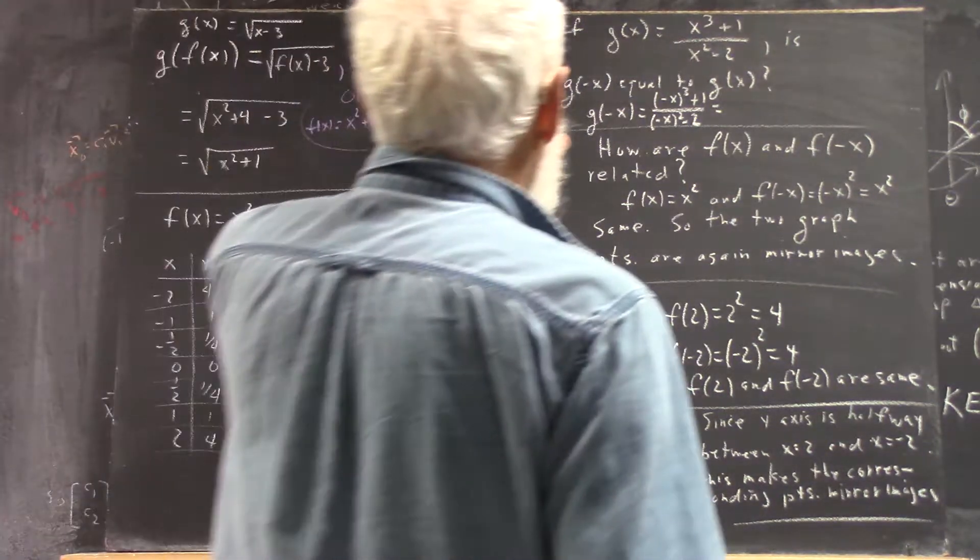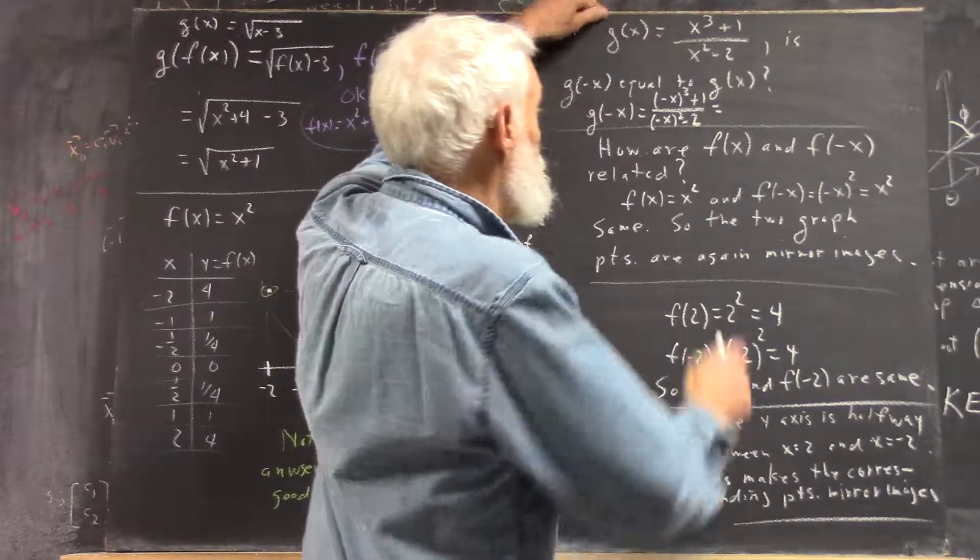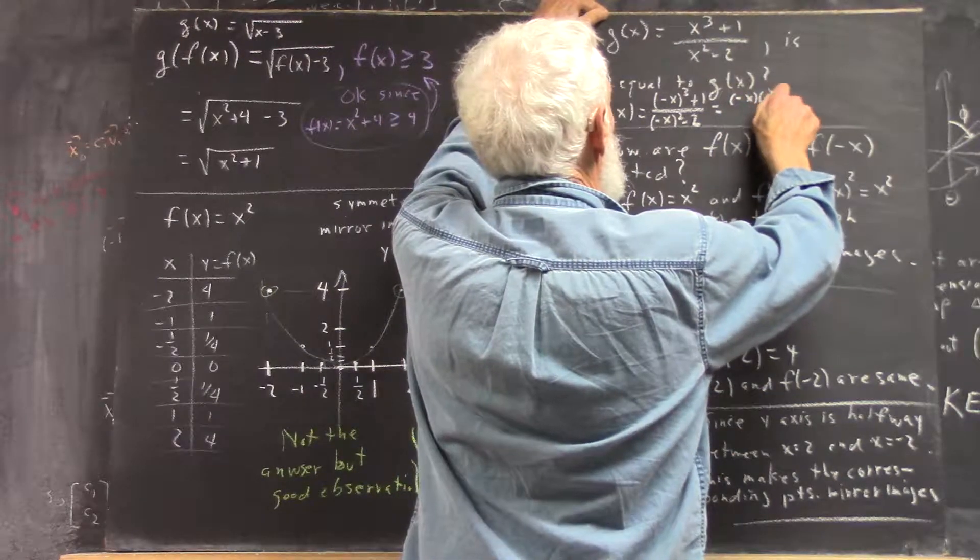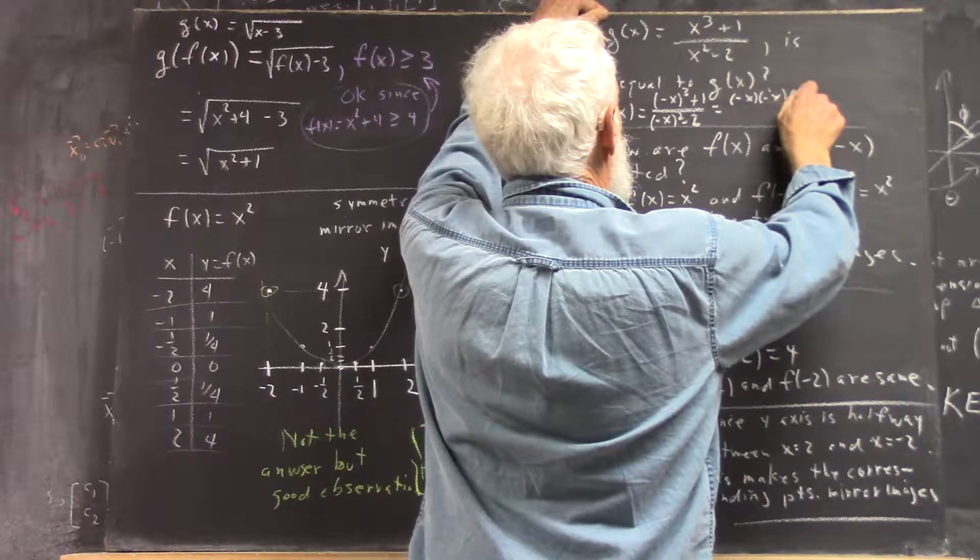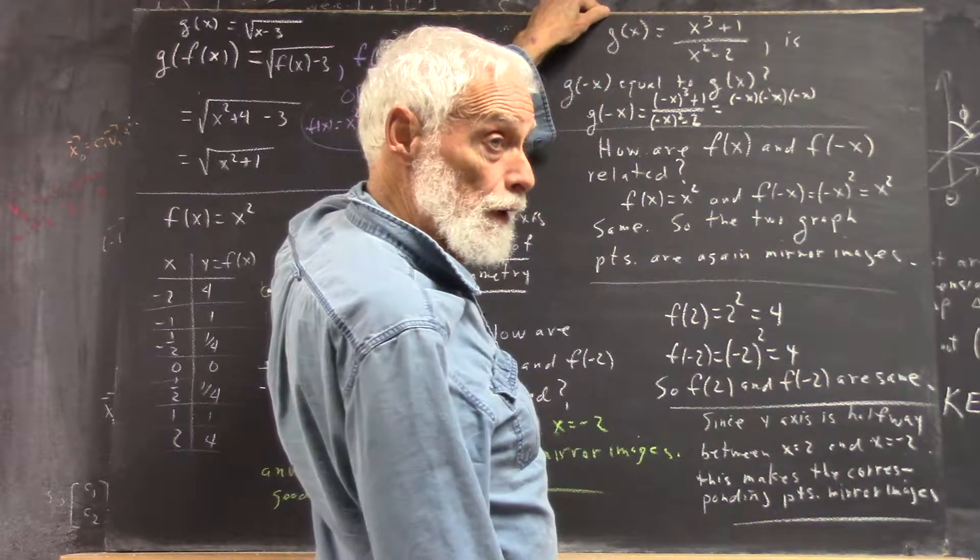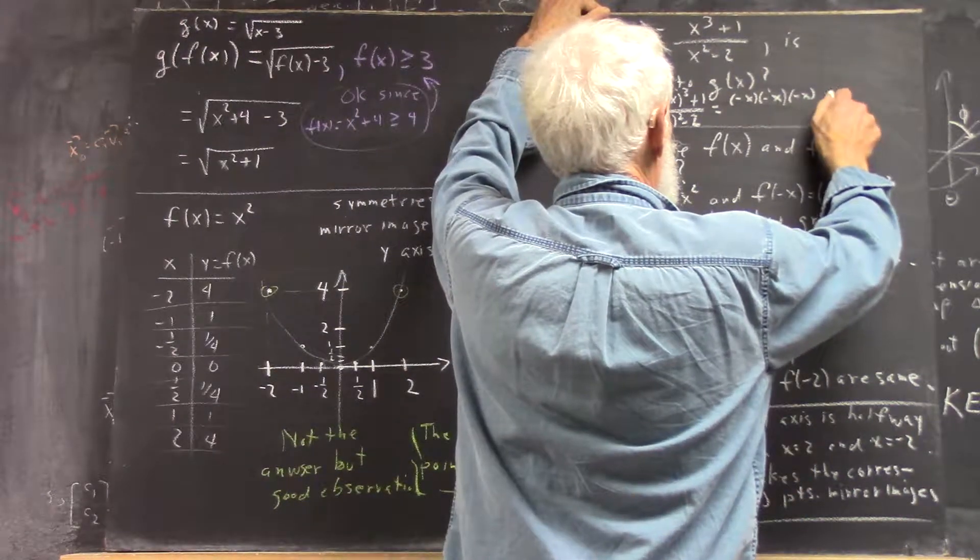Okay, so now negative x to the third means what? It means negative x times negative x times negative x. And then you still have your plus one.